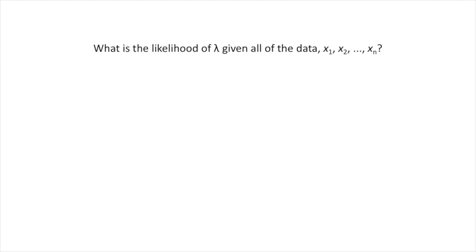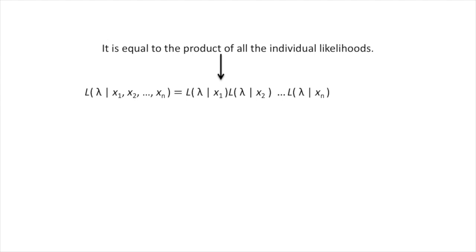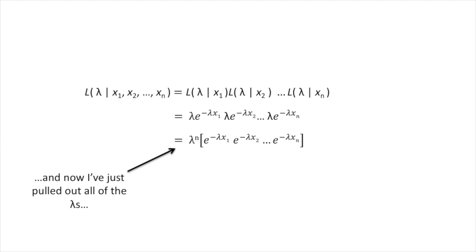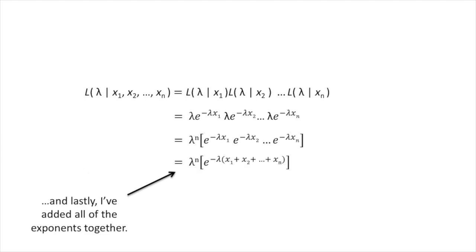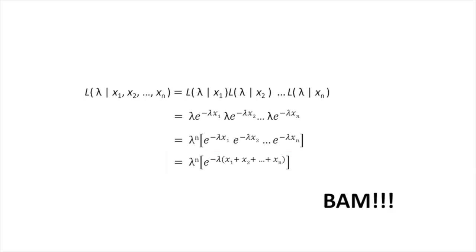What is the likelihood of lambda given all of the data — x sub 1, x sub 2, all the way to x sub n? Here's the likelihood function that includes all of the data we have collected. It is equal to the product of all the individual likelihoods. Plugging in all the individual likelihood equations, we pull out all of the lambdas, and lastly add all of the exponents together. Thus, this equation is the likelihood of lambda given all of the data, x sub 1, x sub 2, all the way to x sub n.